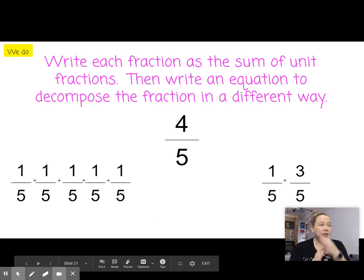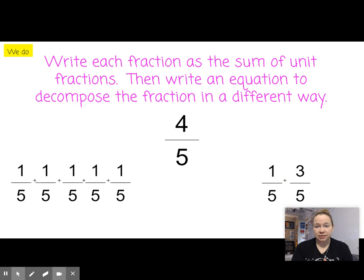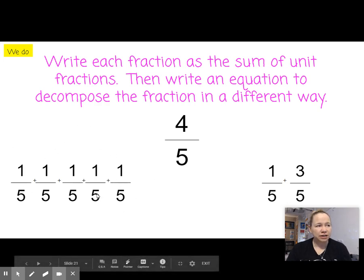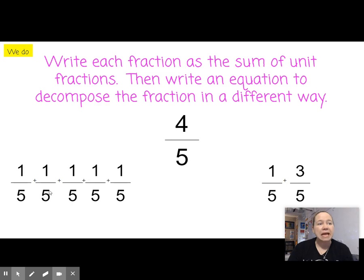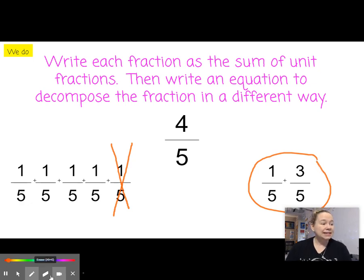This is a we do. Let's do this one together. So write each fraction as the sum of the unit fractions. So sum means we're adding. And unit fractions, remember we break all those down right here. So here's our sum of our unit fractions. Then write an equation to decompose the fraction in a different way. I already did this one for you, even though it says we do. So breaking it down into the sum of unit fractions, we have four-fifths. So one, two, three, four-fifths, right? And then a different way to come up with four-fifths is one-fifth plus three-fifths, because the denominator stays the same, and we add across the top, right? Okay, let's see if you can do it. So grab your whiteboard.